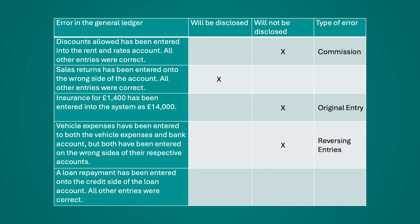Last: a loan repayment has been entered onto the credit side of the loan account, with all other entries correct. The correct double entry for a loan repayment is debit the loan account and credit the bank account. In this example, the loan repayment has been credited to the loan account, and with all other entries correct the bank entry has also been credited. This results in two credit entries, causing an imbalance within the trial balance, and therefore it would be disclosed.